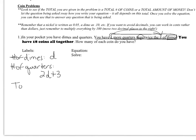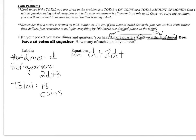Now for the total. The total I have is 18 coins. D stands for how many dimes you actually have in your pocket — do you have 5 dimes, 8 dimes, 10 dimes? Quarters, expressed as 2d plus 3, tells you how many quarters, not how much money you have. Since you know you have 18 coins, all I have to do is take the number of dimes plus the number of quarters and that equals 18. My equation is simply d plus 2d plus 3 equals 18.